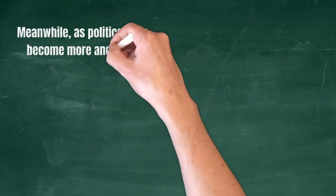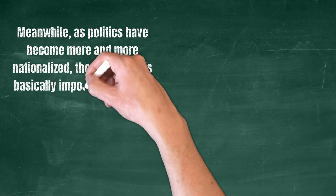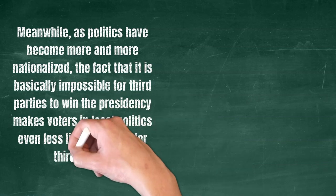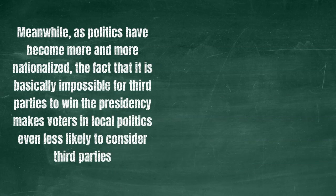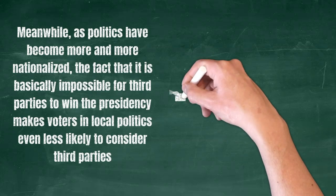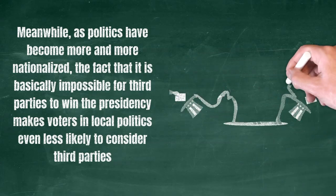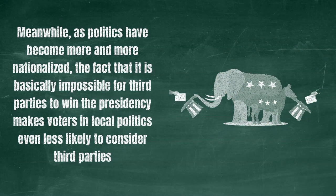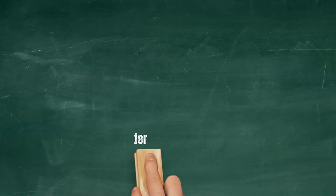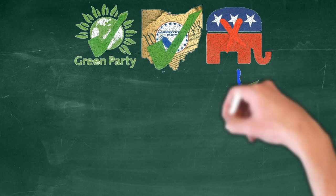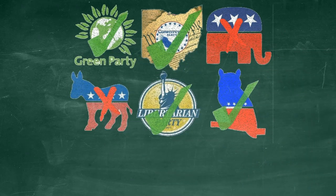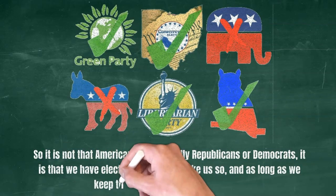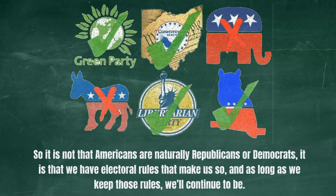Meanwhile, as politics has become more and more nationalized, the fact that it is basically impossible for third parties to win the presidency makes voters in local politics even less likely to consider third parties. It also means that the two parties have control of the electoral machinery at the state and federal level, which means they can make whatever rules suit them. So it is not that Americans are natural Republicans or Democrats — it is that we have electoral rules that make us so, and as long as we keep those rules, we'll continue to be.